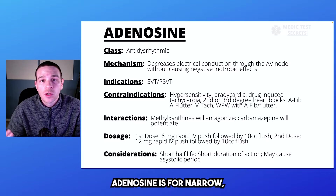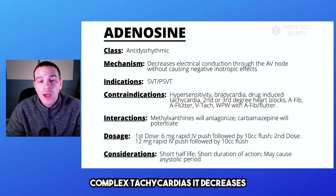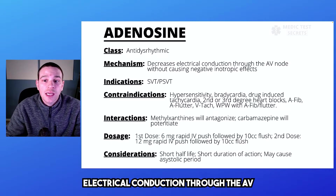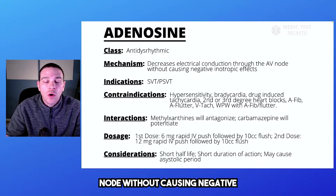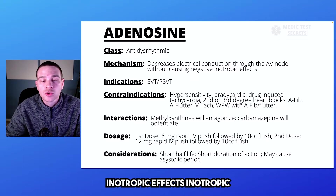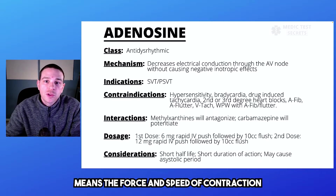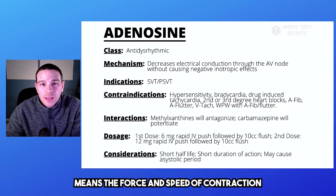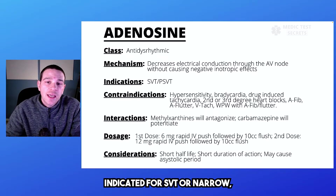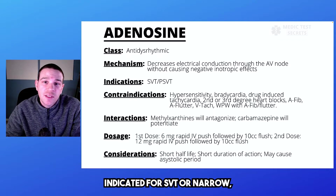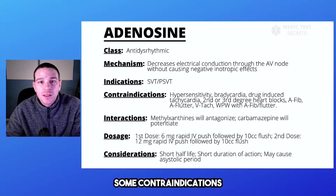Adenosine is for narrow complex tachycardias. It decreases electrical conduction through the AV node without causing negative inotropic effects. Inotropic means the force and speed of contraction. It's indicated for SVT or narrow complex tachycardia.